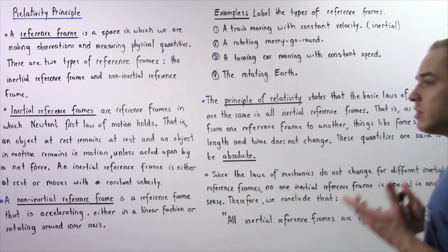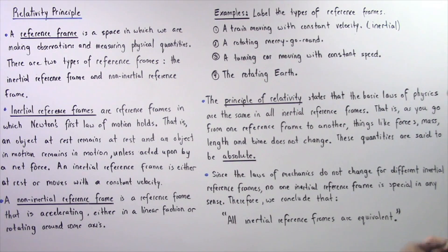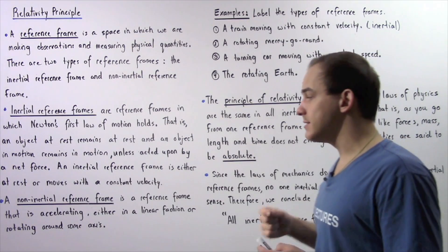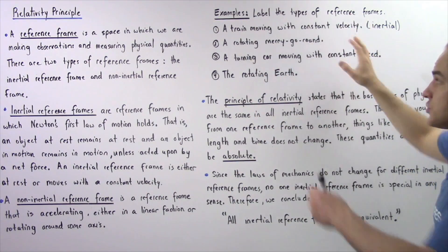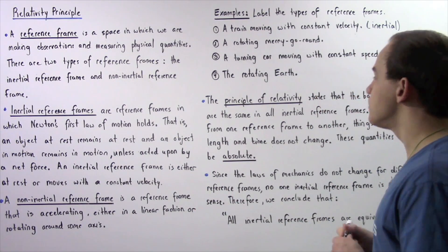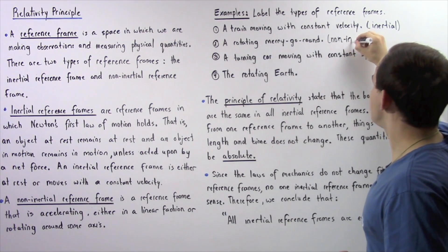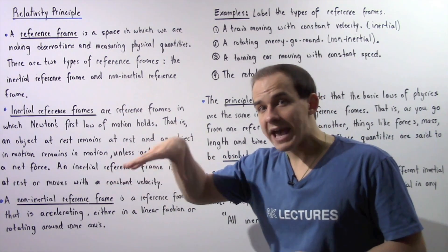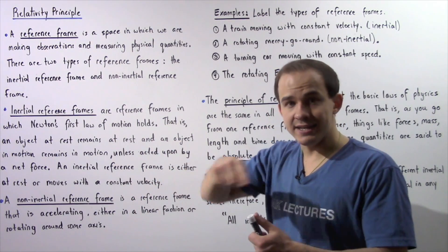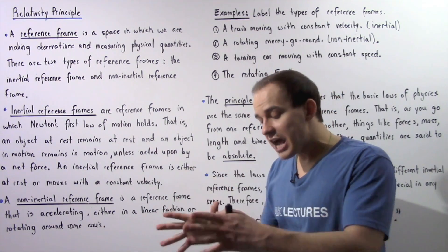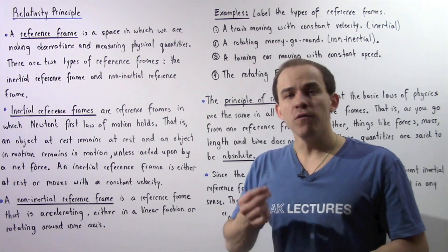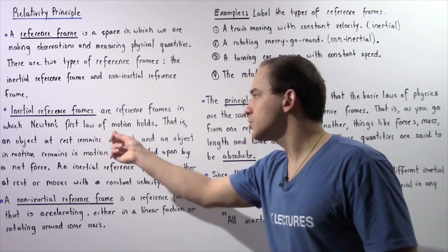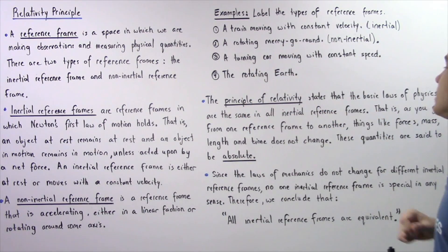Case two: standing on top of a rotating merry-go-round, a rotating disc. By definition, because the disc is experiencing centripetal acceleration, this is a non-inertial reference frame. If we place a ball stationary on the rotating disc and let go, the ball will begin to move outward even though no force is actually acting on it — that's exactly what we mean by a non-inertial reference frame, where Newton's first law does not hold.